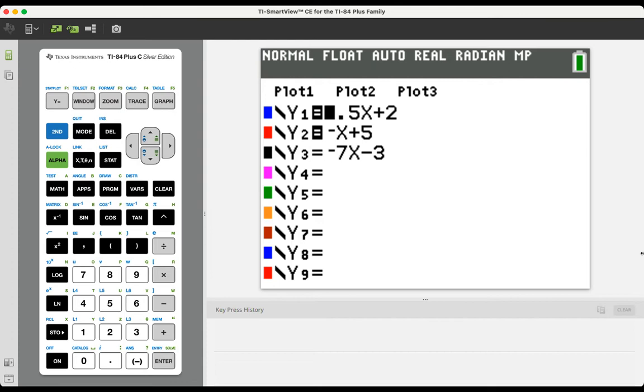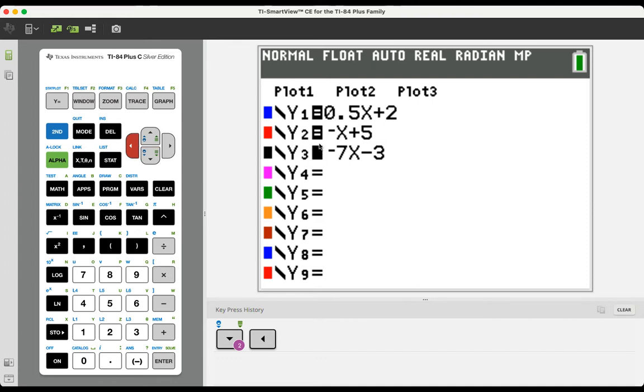We have half x plus 2, we have negative x plus 5, and we have negative 7x minus 3. We are only going to graph two of these at a time. You'll notice that next to the third equation, the equal sign is not highlighted. We can arrow down and hover over the equal sign and press enter on top of that equal sign. That will enable and disable the equation as needed.